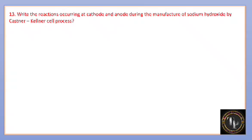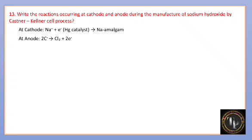Write the chemical equations for reactions occurring at the cathode and anode during the manufacture of sodium hydroxide by the Castner-Kellner cell process. At the cathode, reduction takes place — sodium ions take electrons in the presence of mercury as a catalyst. At the anode, oxidation takes place — removal of electrons is called oxidation.